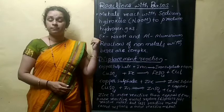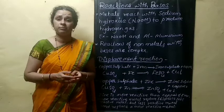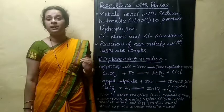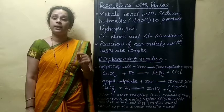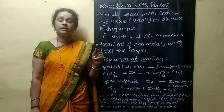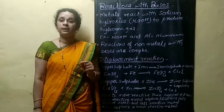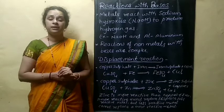The earlier acid reactions are also examples of chemical displacement reaction. The definition: chemical displacement reaction is a type of chemical reaction in which a more reactive element replaces or displaces a less reactive element from their compounds.